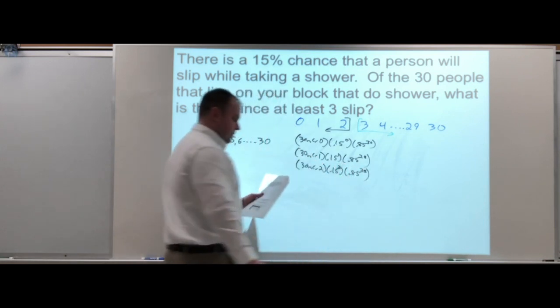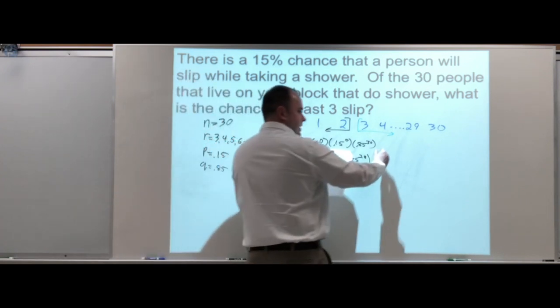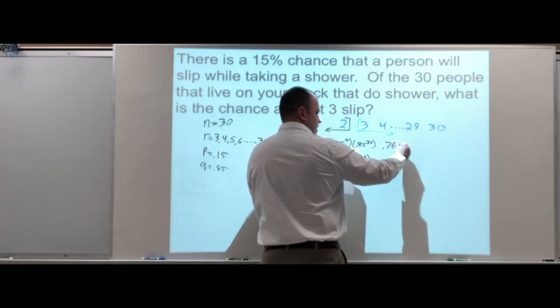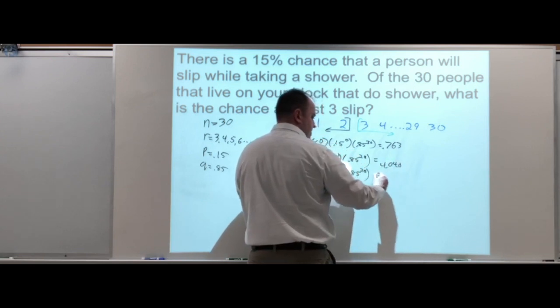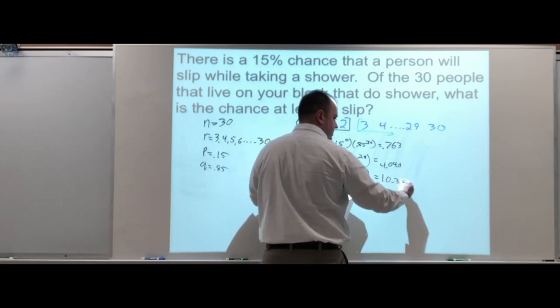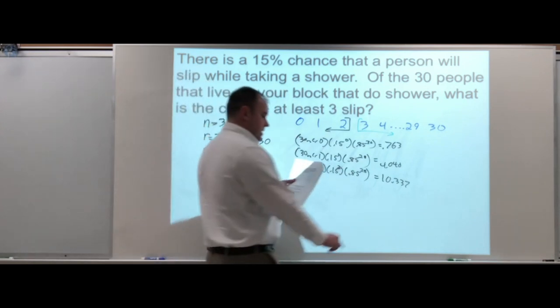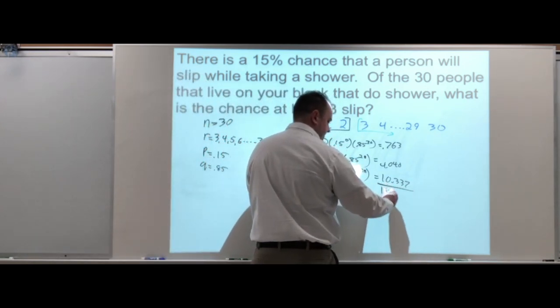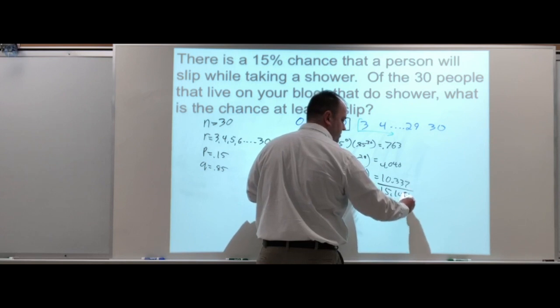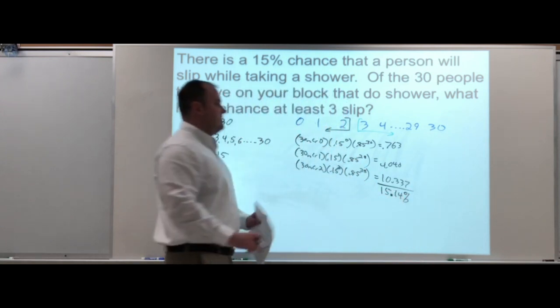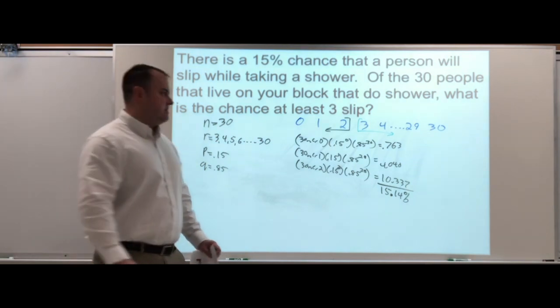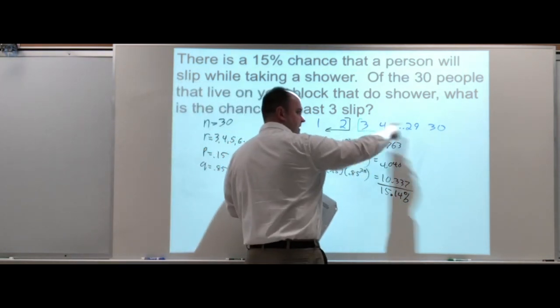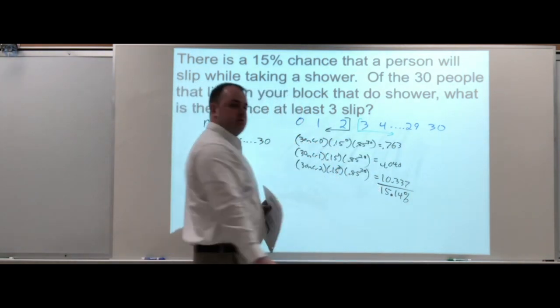If we get those probabilities—fairly small—0.0763, 0.0401, 0.337, if we add all those up, there is a 15.14 percent chance that zero, one, or two people slip.